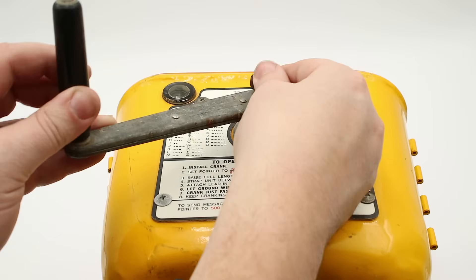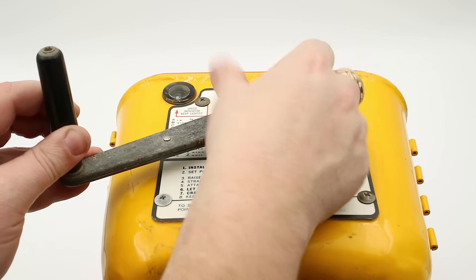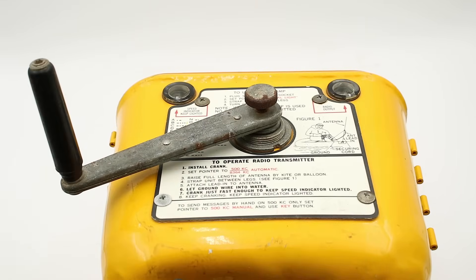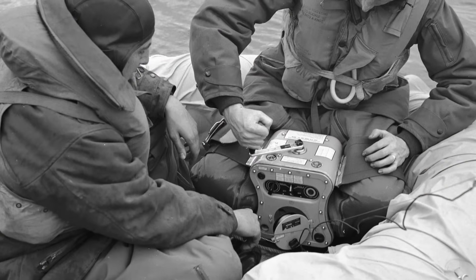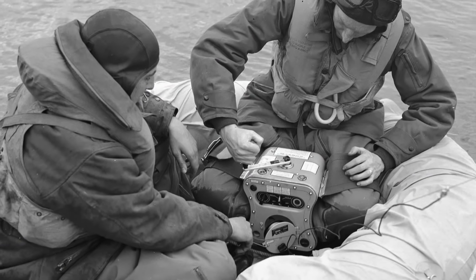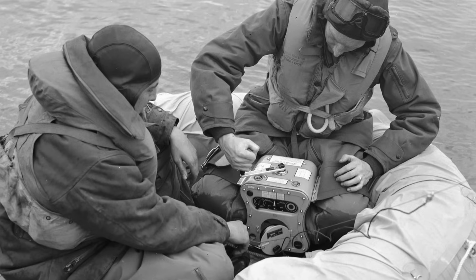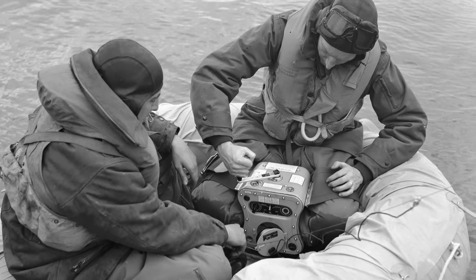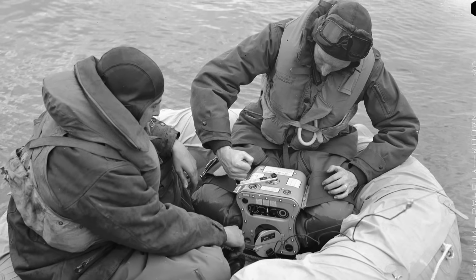Right, so let's start by looking at the power source. Now this is driven by a hand crank that is normally stored in a recess in the back of the case and slots and threads in just like that. And of course, as I covered in the previous video, the unique shape of the Gibson girl is so that you can actually hold it between your knees while turning the power crank. And there's also a strap that you wrap around your knees to further secure the radio.